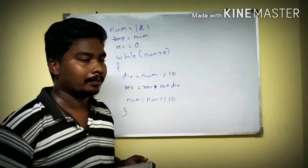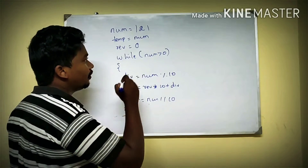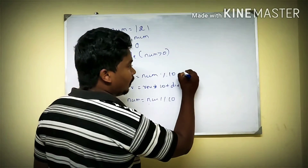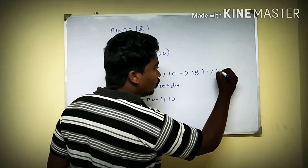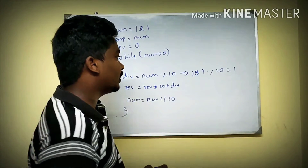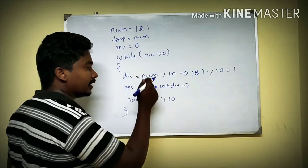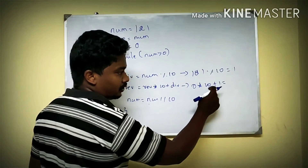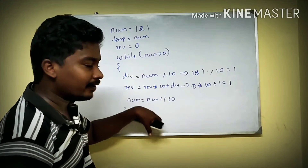So how does this work? When we give a number like 1, the reverse starts at 0. So: reverse equals 0 into 10 plus 1, which is 0 plus 1, which is 1. Then we do num1 equals 1 divided by 10. In integer division, 1 divided by 10 gives quotient 0. So num1 becomes 0, and the loop ends.